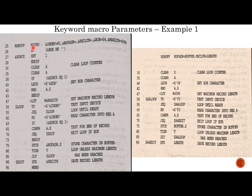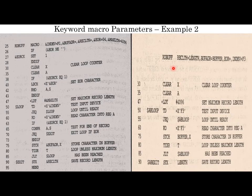Since INDEV is not specified in this invocation, it takes the default value F1. UR is not specified so it takes its default value. Max_length is not specified so it takes its default value 4096. The macro is expanded based on those values. In place of INDEV we get F1. At line number 40, UR is replaced by 04. So keyword macro parameters allow default values to be specified along with parameters.